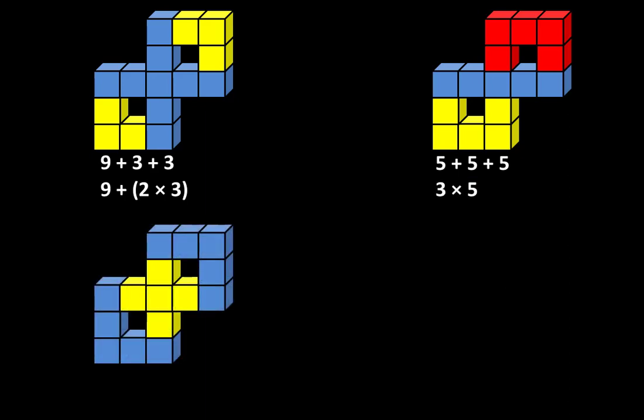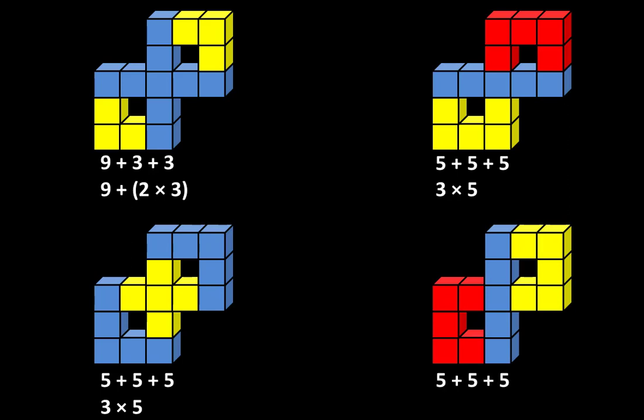The third structure can also be described as five plus five plus five, or three groups of five. And the fourth structure can also be described as five plus five plus five, or three groups of five. In every case, the total is 15.